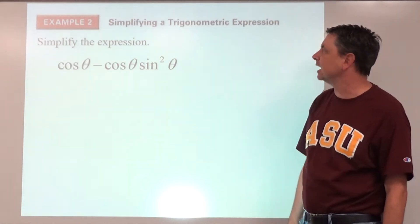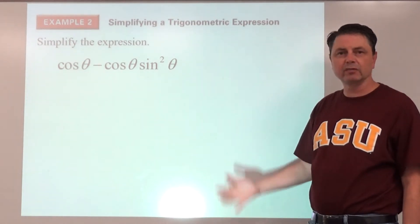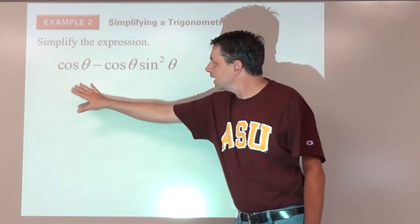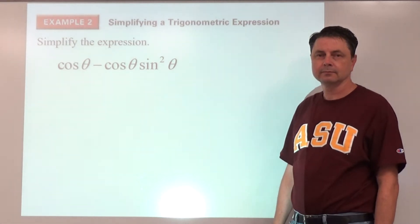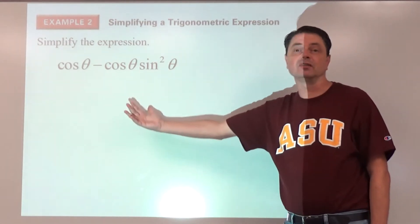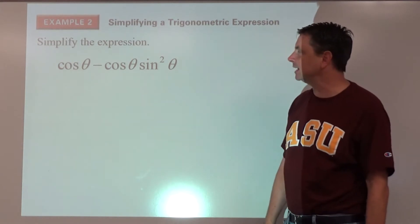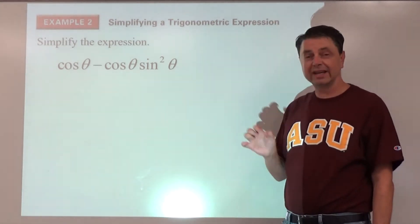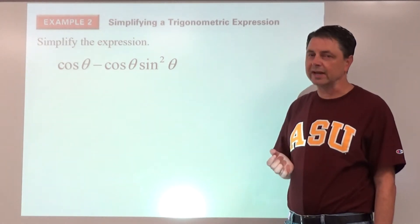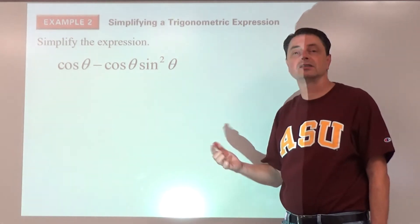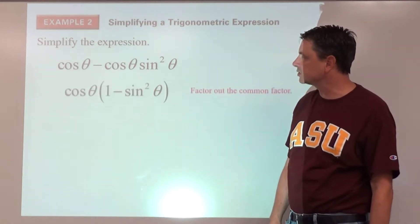Example two is a different style problem: simplifying a trig expression. Looking at the expression, we might be able to factor it. We can factor out a greatest common factor — cosine theta — since that's common to both terms. Keep in mind: cosine theta represents a value, so we can factor it out.